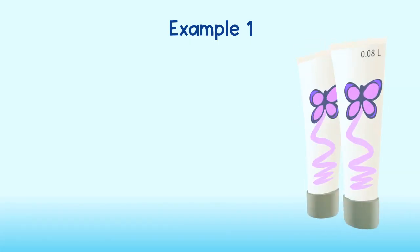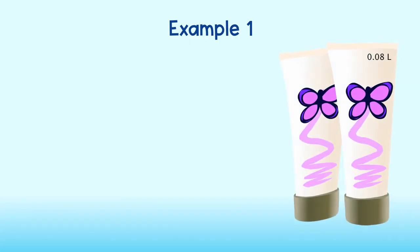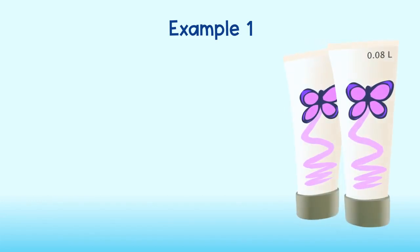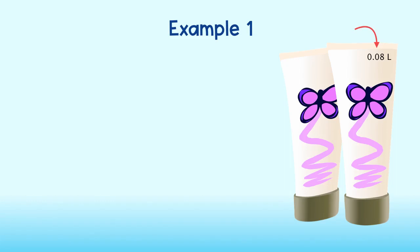Items of very small measure are often measured using fractions. For instance, the hand lotion is eight hundredths liters, or written as a fraction, eight one-hundredths. Just as we have done with very large numbers, we can write very small numbers as a single digit number times a power of 10.